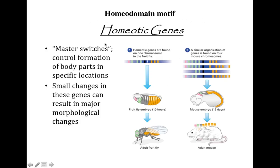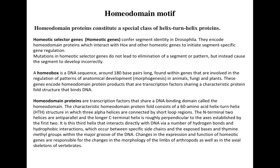These homeotic genes are the master regulators, and the products of these homeotic genes are the homeodomain proteins. Homeodomain proteins are those proteins which contain homeodomain motifs. Homeodomain motifs are basically the motifs found on homeodomain proteins, and these motifs are generally 60 amino acids in length — meaning these three turns of alpha helices are composed of roughly 60 amino acids.